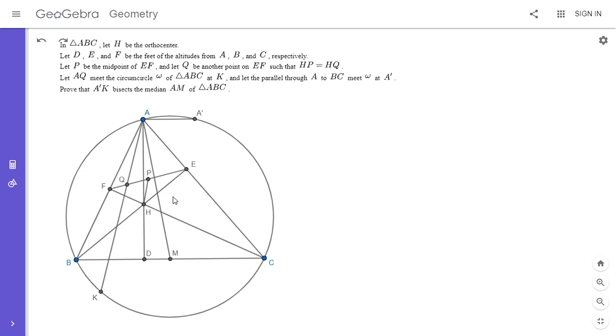Well, so one thing I thought is that if we want to show A'K bisects AM, well, the diagonals of a parallelogram bisect each other. So an idea I had was to reflect point M across D, so I'm going to call that M'.